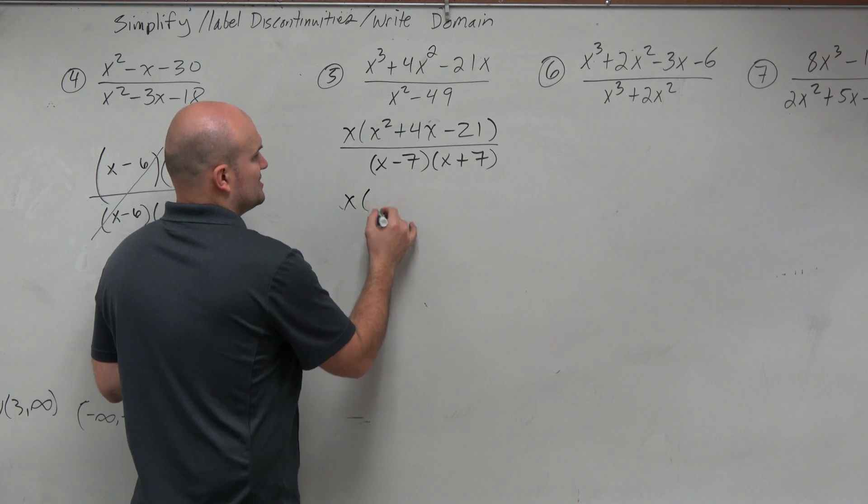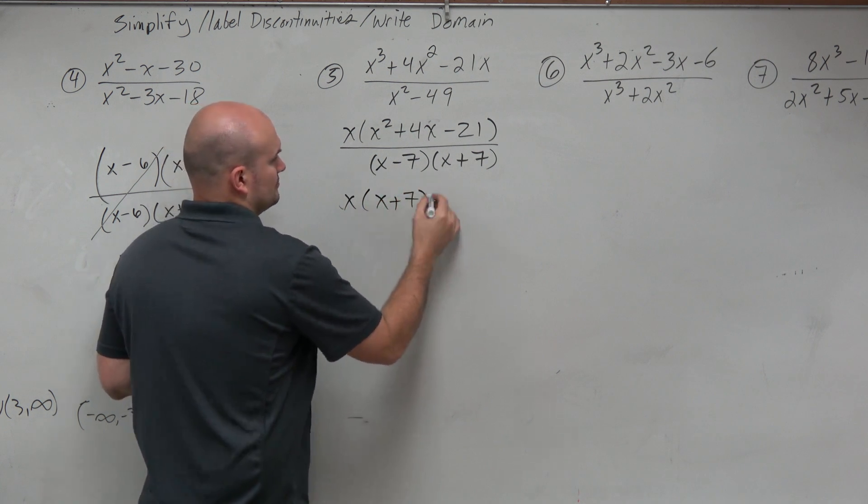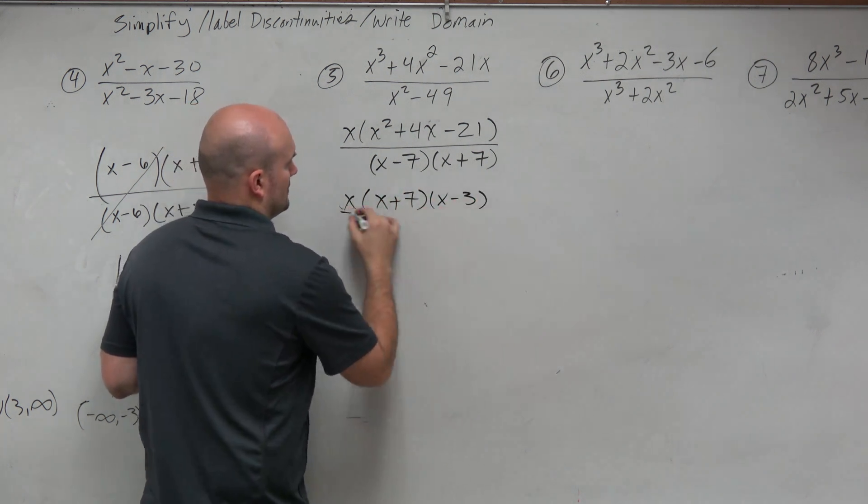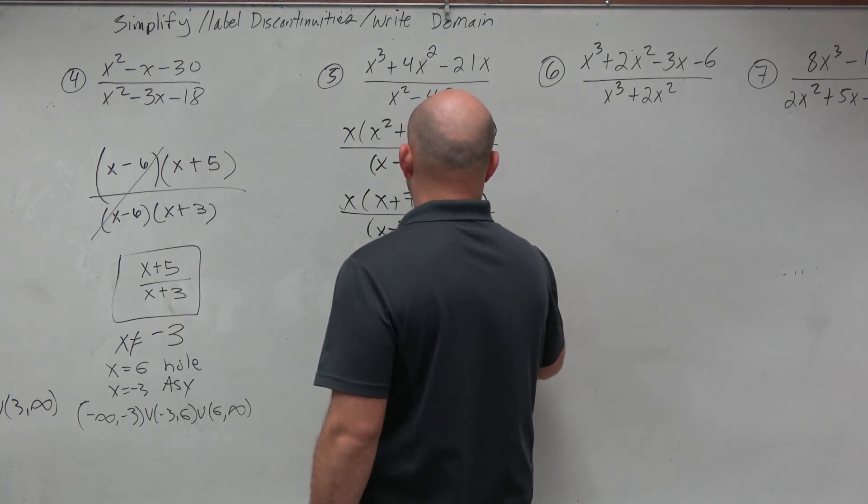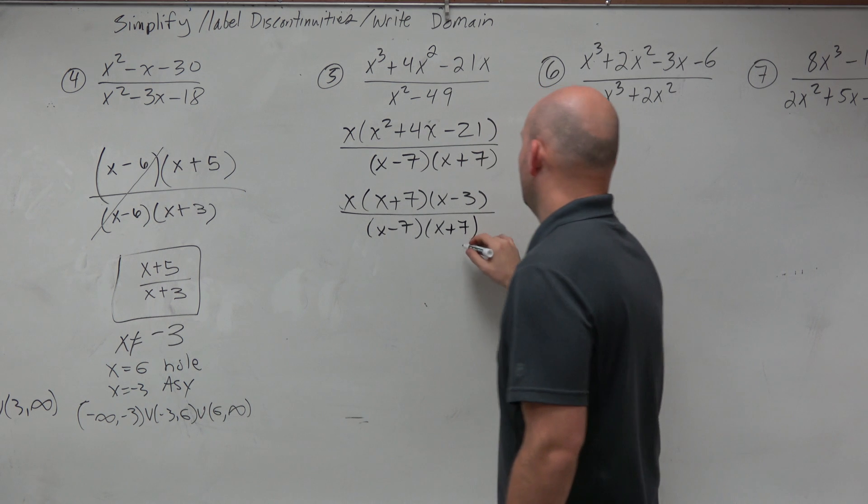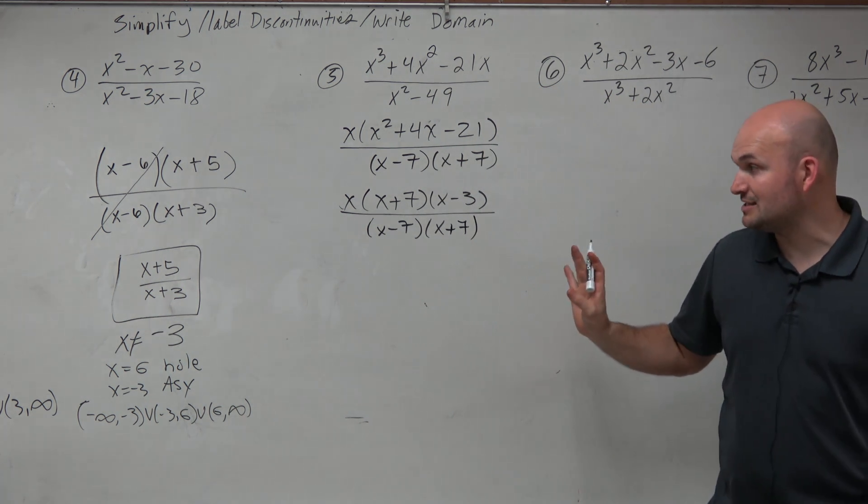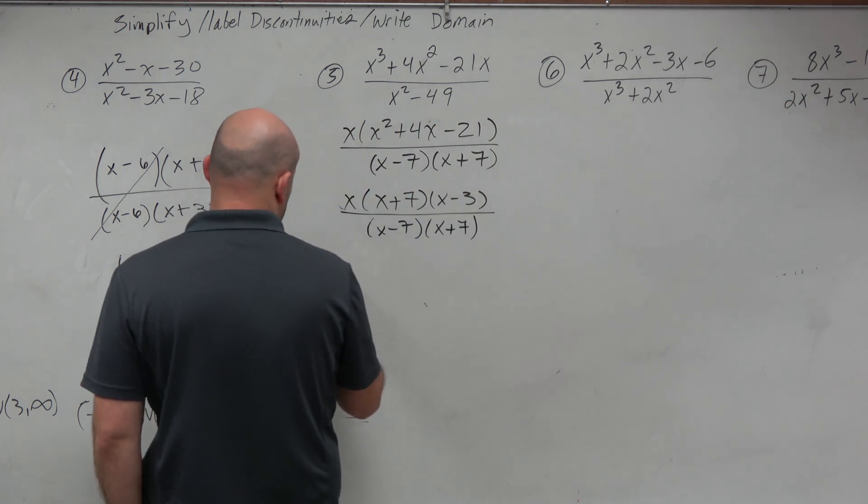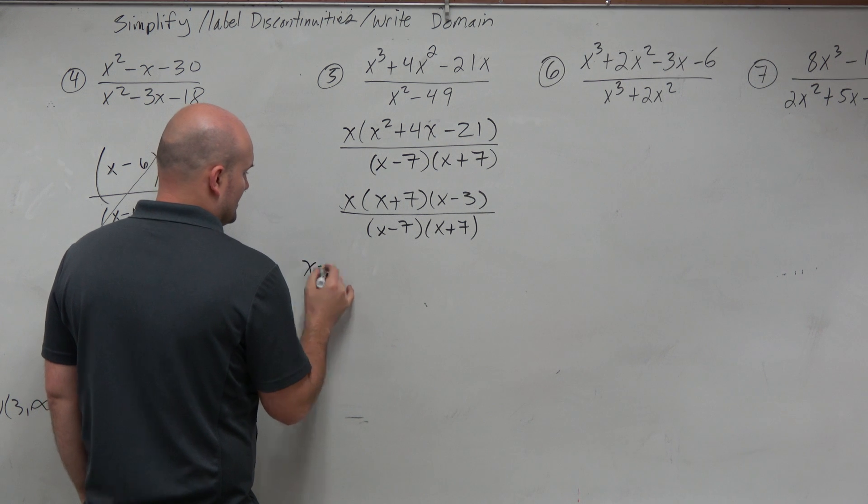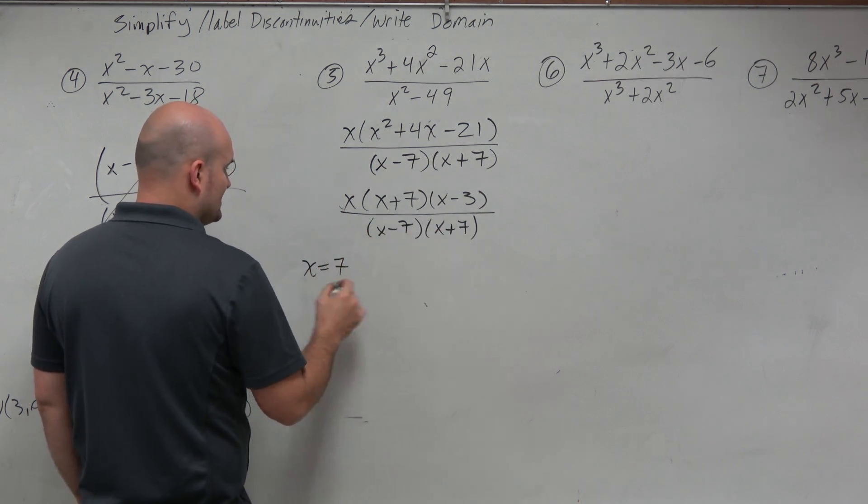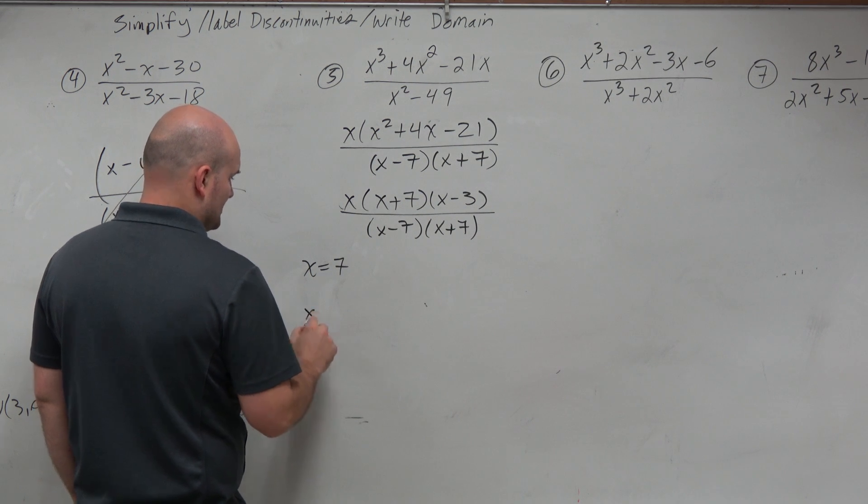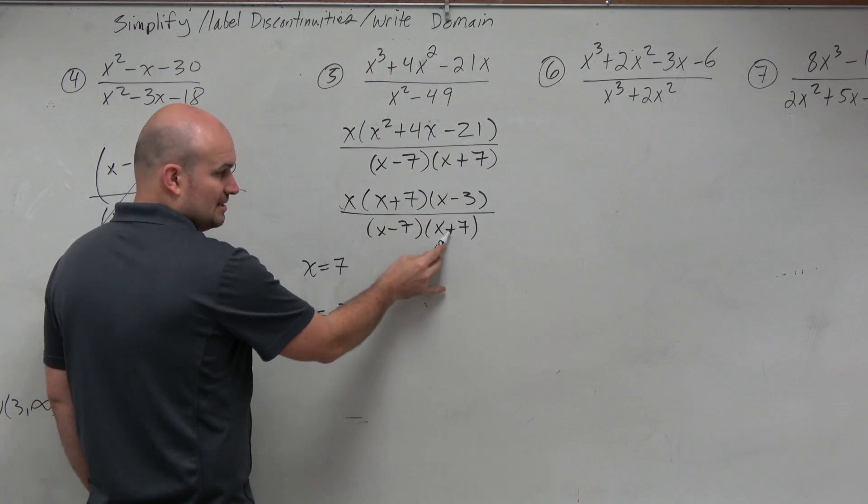Let's factor this out completely. I see that my two discontinuities are x equals 7, because x equals 7 makes the whole denominator 0, and x equals negative 7, because that's going to make the denominator 0.